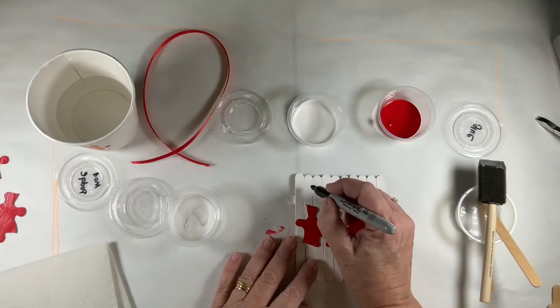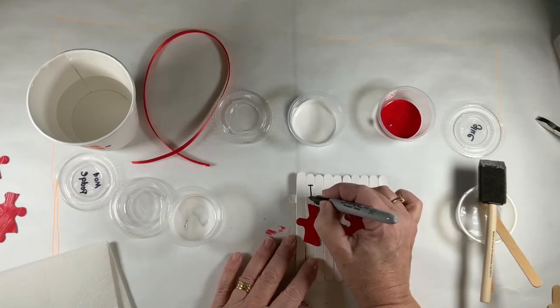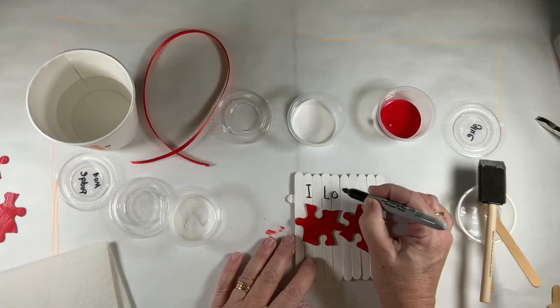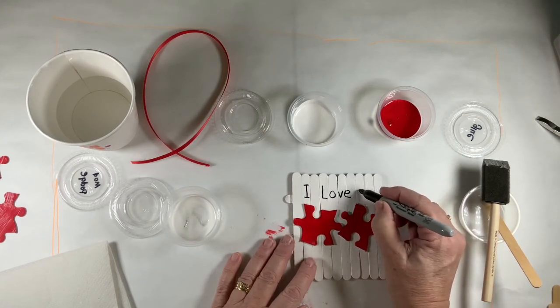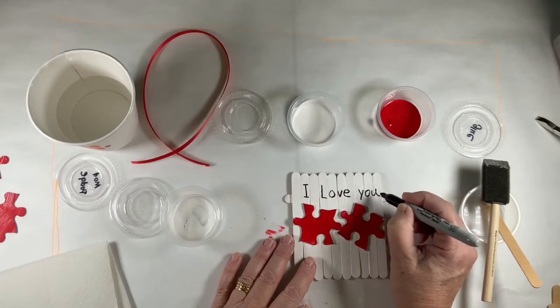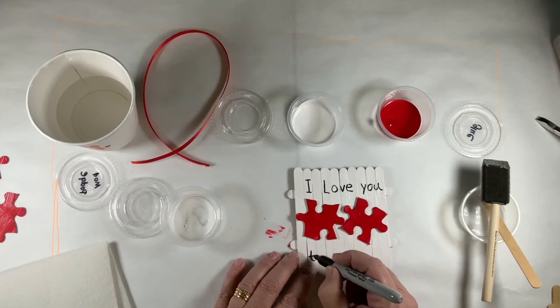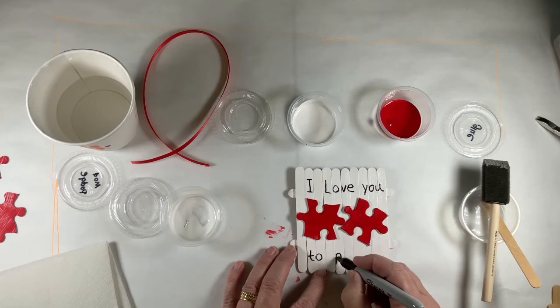So we're going to start up here with a capital I, and then love, and then you. And then 'to pieces' down below: two, pieces.